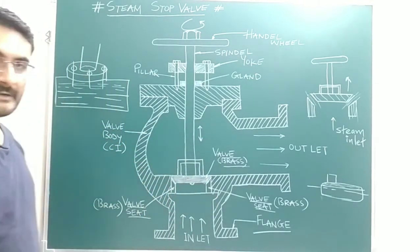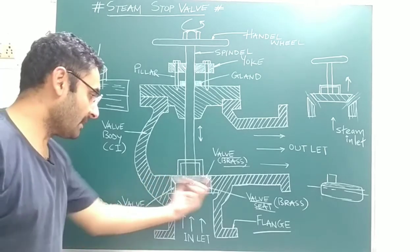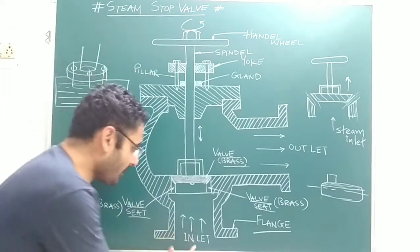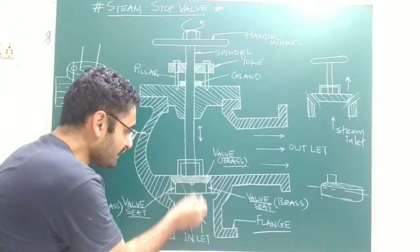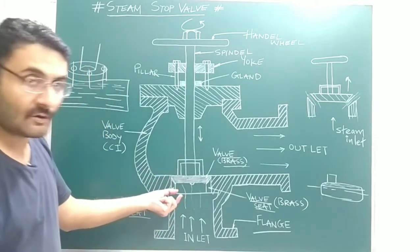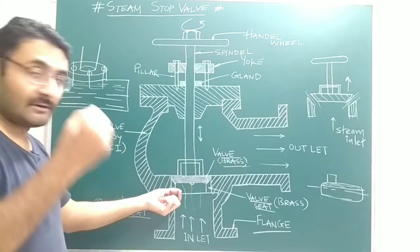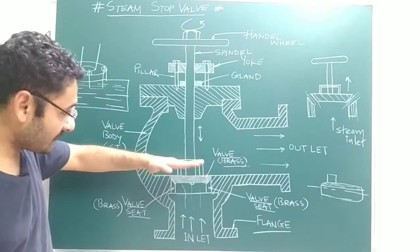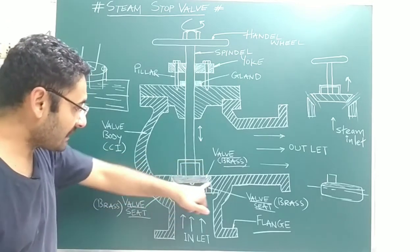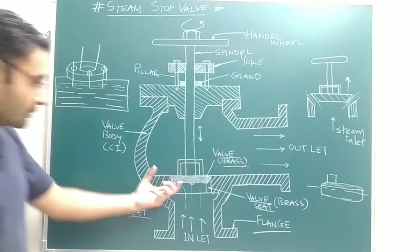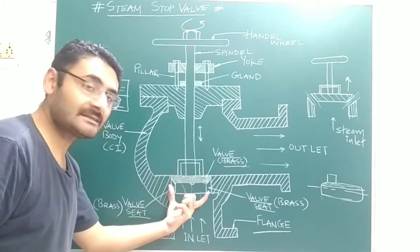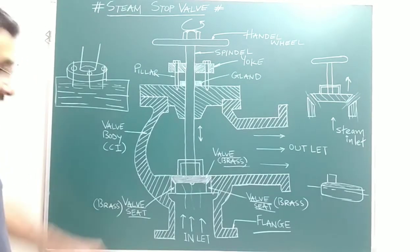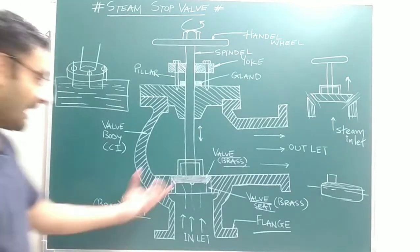A question may arise: why are the valve and valve seat made with brass material? The answer is that steam entering from the inlet contains water particles in the form of vapor. That water may cause corrosion on the valve and valve seat. To avoid corrosion, they are made with brass, because brass is an anti-corrosive material, which gives the valve a longer service life.